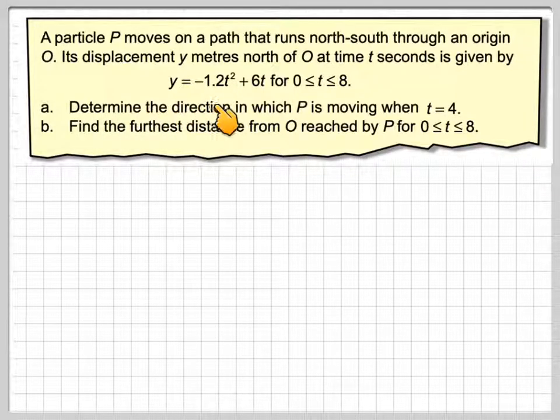It says, A, determine the direction in which P is moving when t = 4, and then find the furthest distance from O reached by P, for t being between 0 and 8.